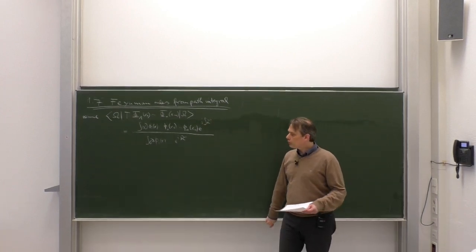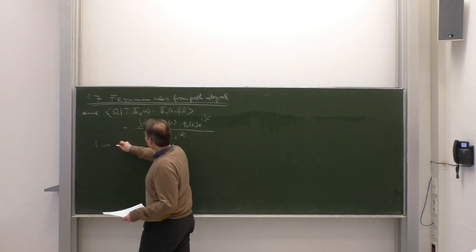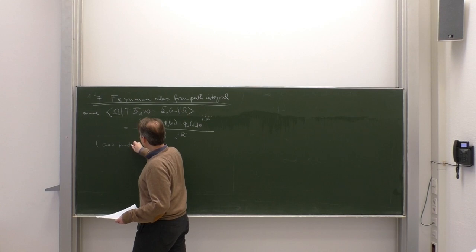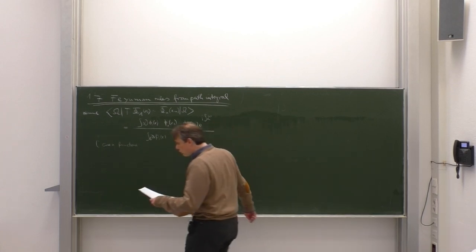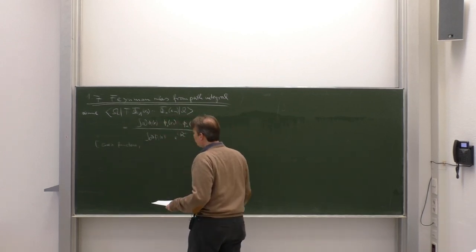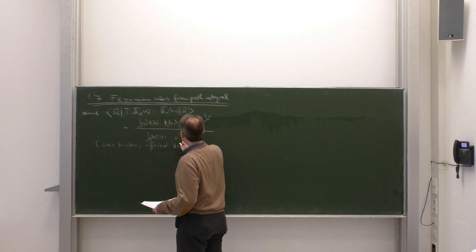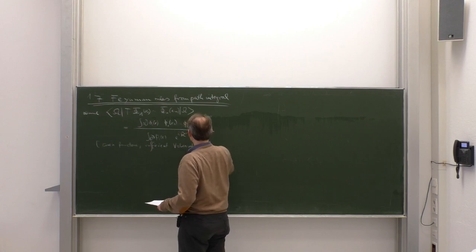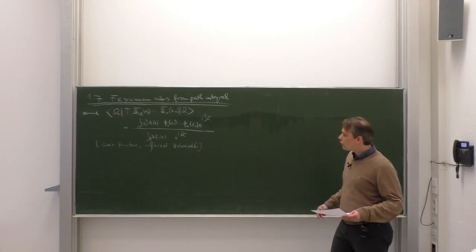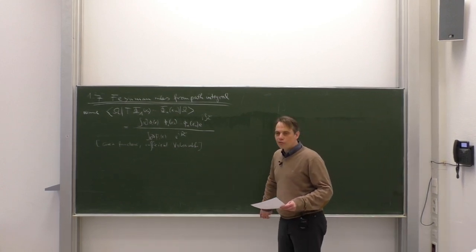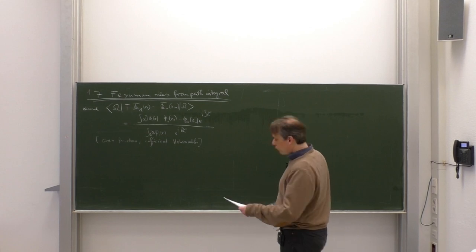These objects are called green functions. We did not directly discuss them in quantum field theory last semester, but they are sufficient for all observables. For example, using the so-called LSZ formalism you can construct S-matrix elements from such green functions, and you can also construct mass eigenvalues of p-squared operators from green functions.